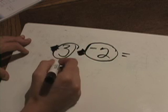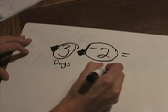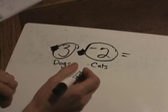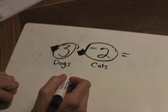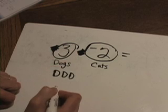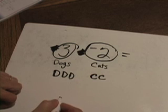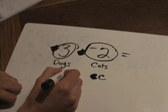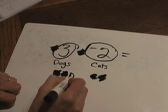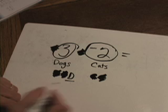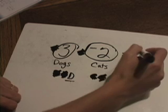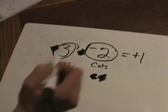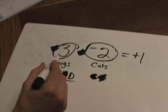We're going to consider the positives to be dogs and the negatives to be cats. As most of you know, dogs like to chase cats. So when you see a dog and a cat in the same problem, that dog is going to chase that cat and they'll run right out of the problem. Here we have three dogs — I'll put three D's — and two cats, represented by C's. One dog chases one cat out, another dog chases the other cat out, and we're left with one dog. Dogs are positive numbers, so our answer is positive one. Three minus two is one, of course — it just looked more complicated because of the extra plus symbols.